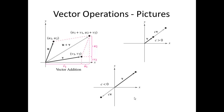Geometrically, if this is vector U and this is vector V, I can complete a parallelogram, and the main diagonal of this parallelogram is our vector U plus V. If V is a vector and c is greater than 0, then this is the vector represented by c times V. Similarly, if c is less than 0, then the vector represented by c times V points in the opposite direction.